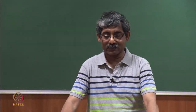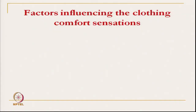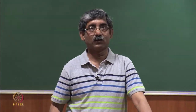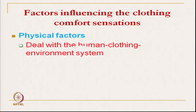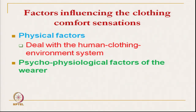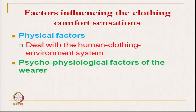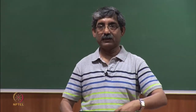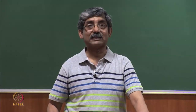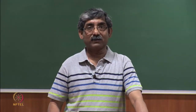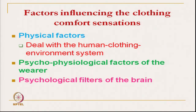If you talk about the psychological aspect, there are 3 main factors which influence clothing comfort sensation. First is physical factors which deals with the human-clothing-environment related factor — that is a human clothing system. We will not discuss that here; we will discuss the factors related to psychological and psychophysiological factors of the wearer, which indirectly affect clothing comfort sensation. The second is psychophysiological factors of the wearer, and the third is the psychological filter of the brain.